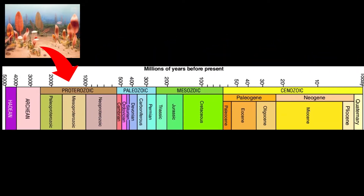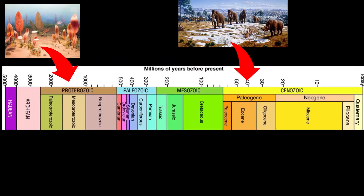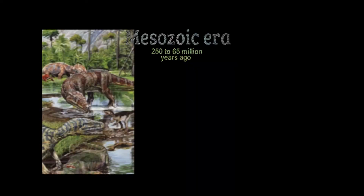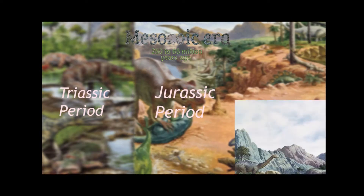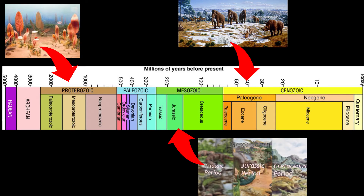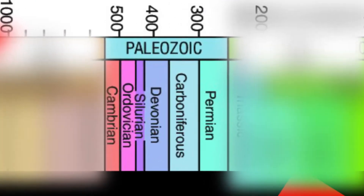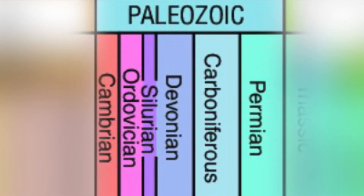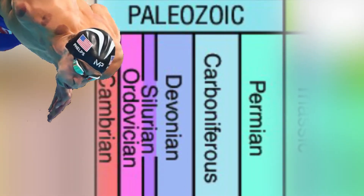If you guys remembered in my fifth video, I talked about the Mesozoic Era and its three periods. It had a lot of terrestrial life, including reptiles, mammals, and plants. But what about the era that led to the Triassic Period and life before the age of dinosaurs? Well today we're going to dive into — like literally dive into — the Paleozoic Era.